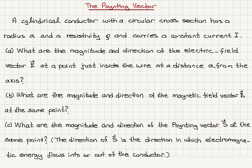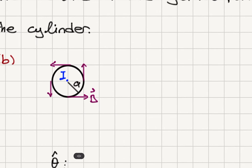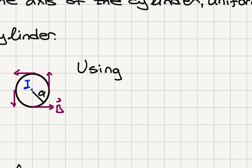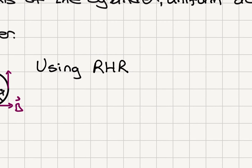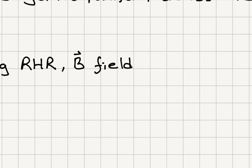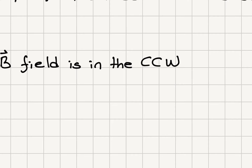Part B: what are the magnitude and direction of the magnetic field B at the same point, at a distance A from the axis? With the current coming out toward us, if you follow the current direction with your right thumb, the four fingers of the right hand curl in the counterclockwise direction — that indicates the direction of the magnetic field. Using the right-hand rule, the magnetic field B is in the counterclockwise direction.